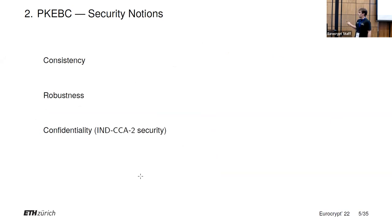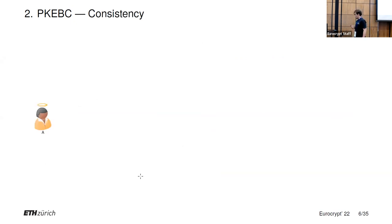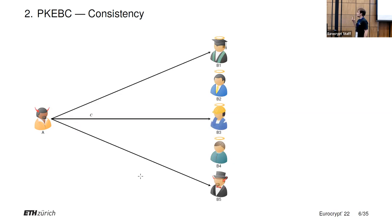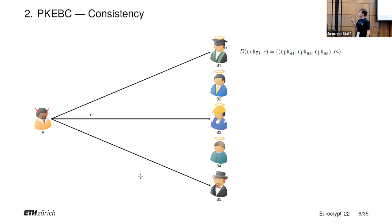We consider three basic security notions for PKE-BC schemes, plus anonymity or IK-CC2 security. Consistency captures the following: even if Alice would be dishonest, any ciphertext she might produce satisfies the property that if one honest receiver decrypts it and obtains some message and some vector of public keys — for example, B1, B3, B5 — then any other honest receiver whose public key is in this vector, when it decrypts the same ciphertext, will obtain exactly the same vector and exactly the same message.